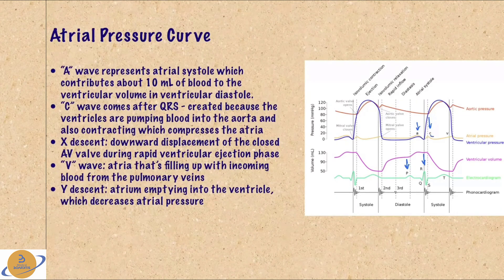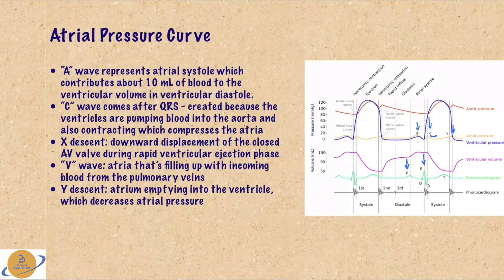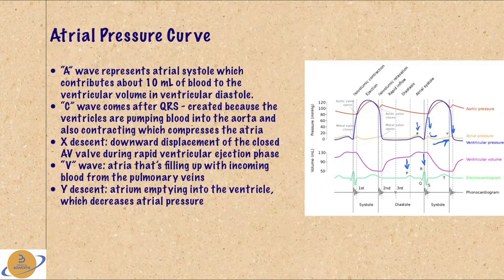After the C wave, we have the X descent, which represents the downward displacement of the closed AV valve during the rapid ventricular ejection phase — the atria just relaxes a little. Then there is the V wave; before it, you can see the pressure slowly increasing because the atria is getting blood from the pulmonary veins. After the V wave, you have the Y descent, which represents the atria emptying into the ventricles, decreasing the atrial pressure.